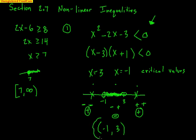Why am I not using brackets? Because I'm not allowed to equal negative 1 or 3 — I have to be strictly less than. Negative 1 and 3 make me equal to 0, and I can't equal 0. The interval notation represents all numbers from negative 1 to 3.